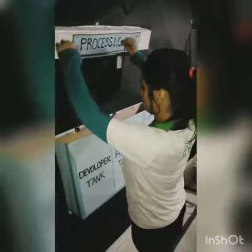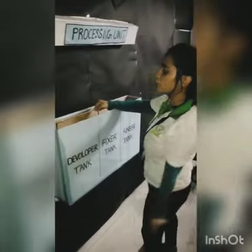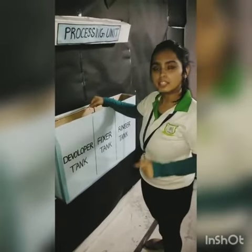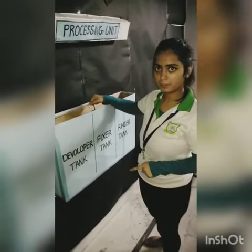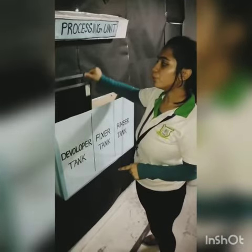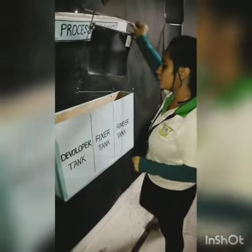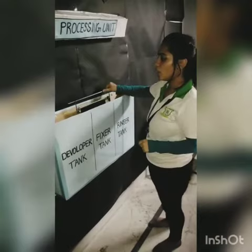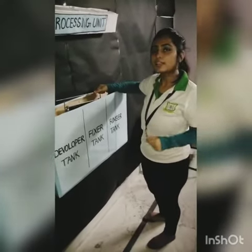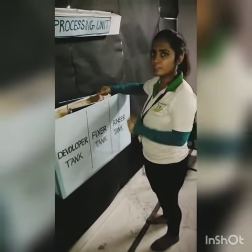Now I will show you how to develop a film. First, the film should be hung in the hanger like this. Then you dip this film in the developer tank for a few minutes, where the latent image formation occurs. Remove your film from the developer tank and then dip it into the fixer tank, where the hardening of gelatin occurs and the AgBr crystals fix on the film.